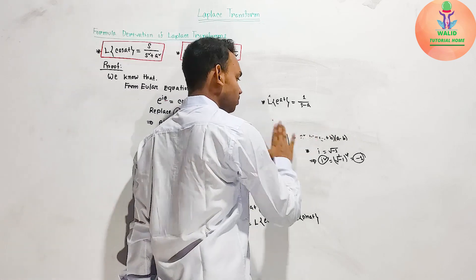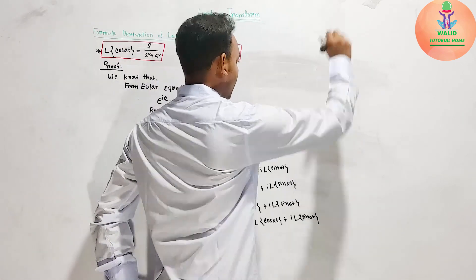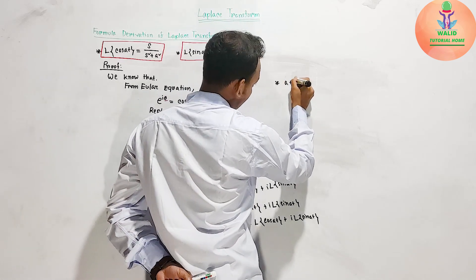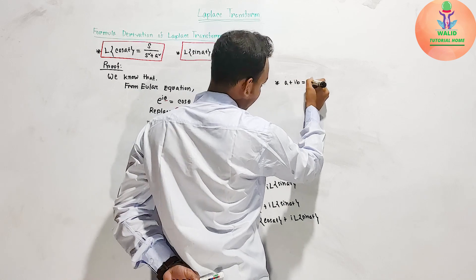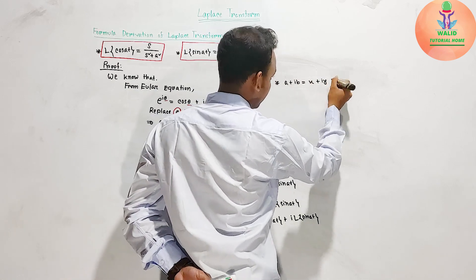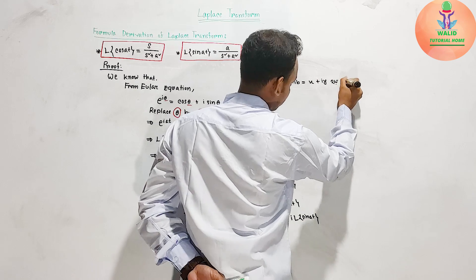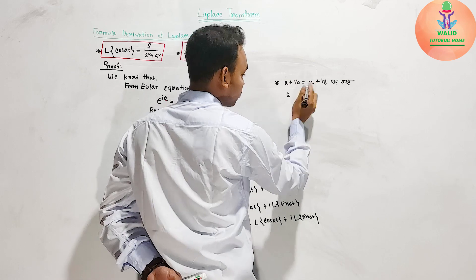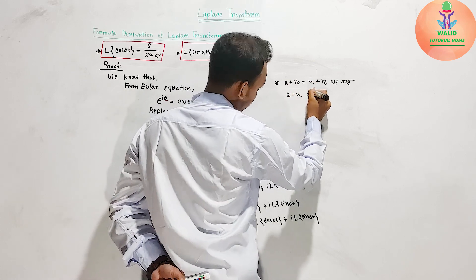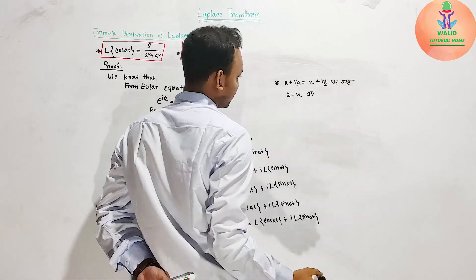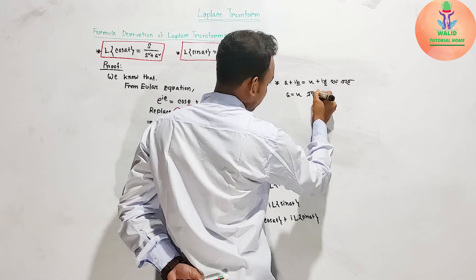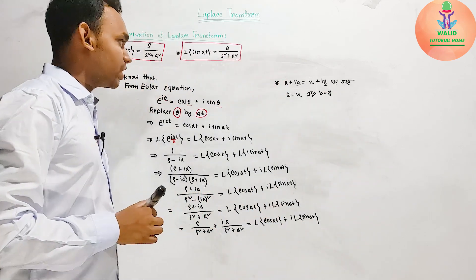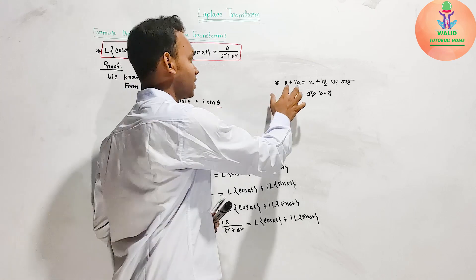Now you know the equating property of complex numbers. The property of complex numbers states: if a plus ib equals x plus iy, then we have a equal to x and b equal to y. That is, real parts are equal and imaginary parts are equal.